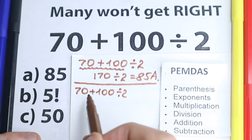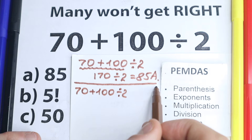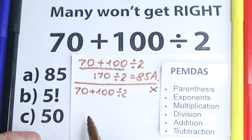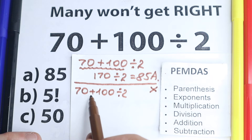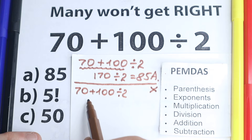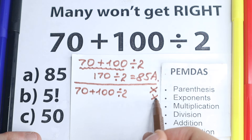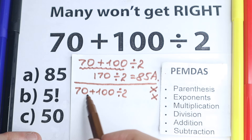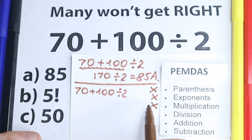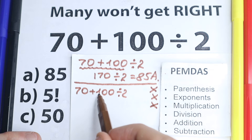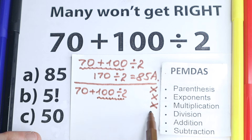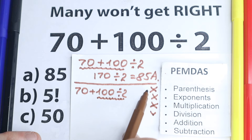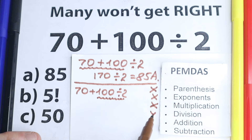First step: parentheses. Are there any parentheses? No, so we skip this. Next step: exponents. Any squares or cubes? No, so we skip this. Next step: multiplication and division — these form one common group in PEMDAS. I don't see any multiplication sign, but I do see a division sign. So after skipping parentheses, exponents, and multiplication, we calculate the division part first.